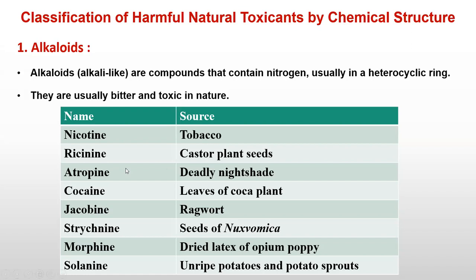Here you can see there are different types of alkaloids: nicotine, whose source is tobacco; ricinine, whose source is the castor plant seed; atropine, whose source is deadly nightshade; cocaine, whose source is leaves of the coca plant; jacobine, which is also one of the important alkaloids whose source is ragwort; and strychnine, whose source is nux vomica seeds.